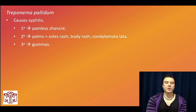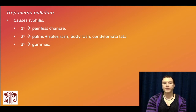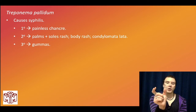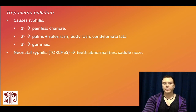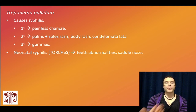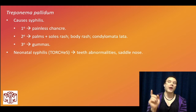Tertiary syphilis presents as gummas, which will look like chancres but in locations such as the face rather than the genitals. They might show you a guy with one on his nose and tell you biopsy shows plasma cell infiltration with vasculitis — that is a very difficult pathologic descriptor for tertiary syphilis. For neonatal syphilis: saber shins, saddle nose, and teeth abnormalities are very high yield. I've seen questions mentioning tooth abnormalities — Hutchinson incisors, Hutchinson molars, mulberry teeth.